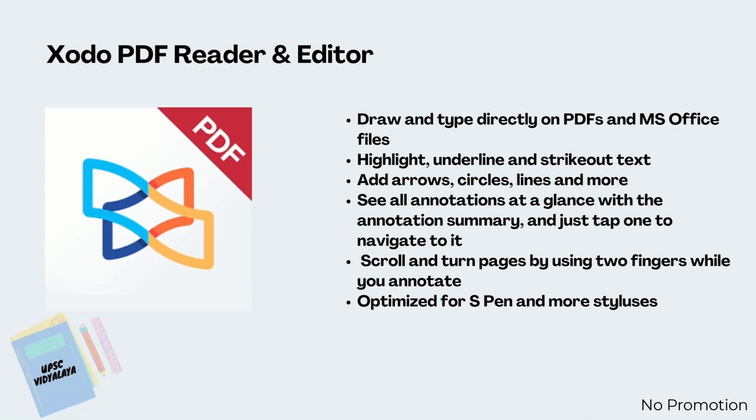Zodo: Draw and type directly on notes, PDFs, and doc files. Highlight, underline, and strike out text in chapter notes of PDFs. Add arrows, circles, lines, and more. See all annotations at a glance with the annotation summary, and just tap once to navigate to the points that you marked. Also optimized for S Pen and more styluses.